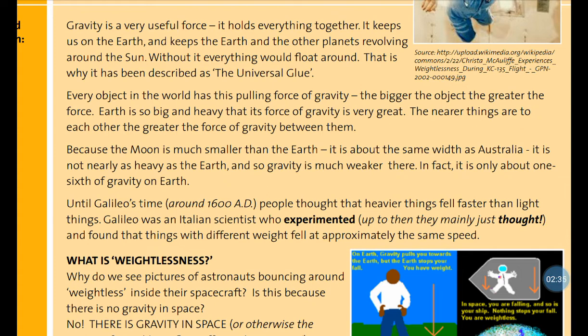Until Galileo's time, which is around 1600 AD — about 400 years ago — people thought that heavier things fell faster than light things. Galileo was an Italian scientist who experimented. Up to then, they mainly just thought about it. He found that things with different weights fell at approximately the same speed.